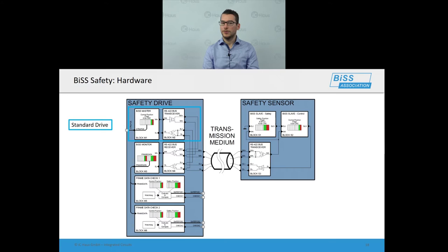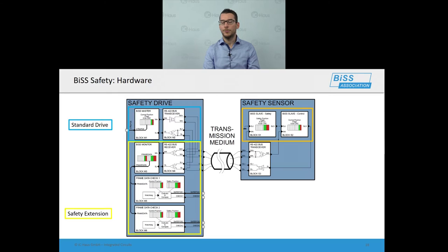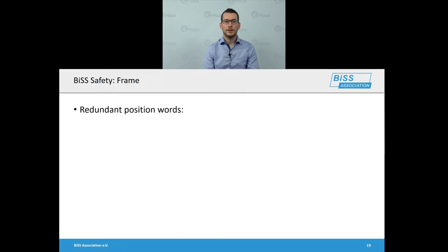Here is a hardware example. There is a safety drive consisting of a standard BiSS drive which contains the BiSS master, extended by a data and safety extension. The safety block contains a BiSS monitor which observes the data lines and performs frame data checks. On the slave side, a BiSS safety sensor contains two independent position words generated by one or two sensors. There is a control position word used by the standard drive for motor control, and both the control and safety position words are used by the safety extension to perform safety checks.